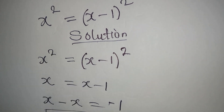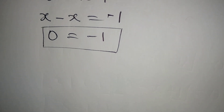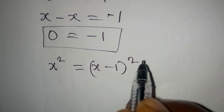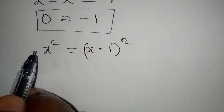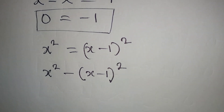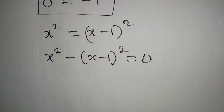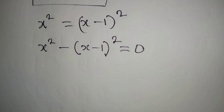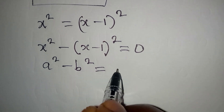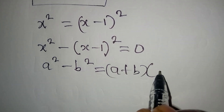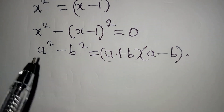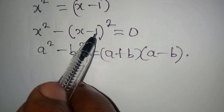So if you equate the bases because the powers are the same, you will be wrong. We have x squared equal to x minus 1 squared. What you will do is bring this to the left: x squared minus (x minus 1) squared equals 0. You can apply the difference of two squares, because a squared minus b squared equals (a plus b)(a minus b). Our a is x and our b is x minus 1.